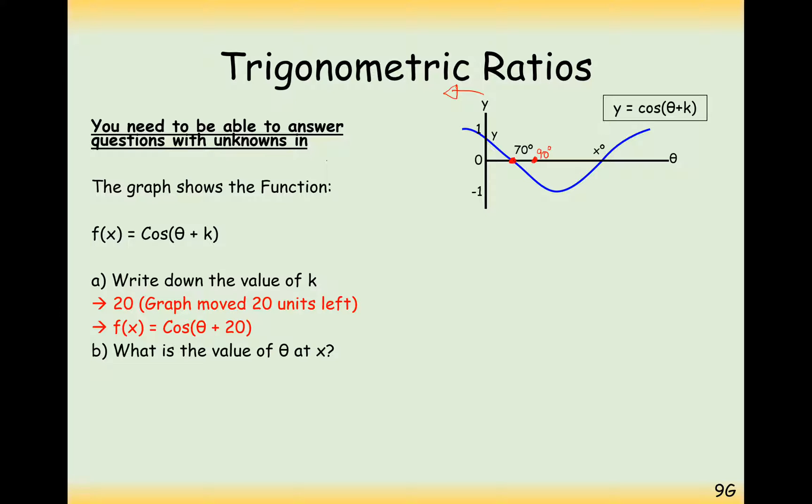Part B to this question is find the value of theta at x. Well, it would usually come back up at 270 degrees. So moving it left by 20 would give us 250. And the third question for this part here is what is the minimum coordinate here? Well, this minimum coordinate here would have been at 180, so it's now going to be at 160, and the value of this minimum point is minus 1. So 160 minus 1 is your answer there.